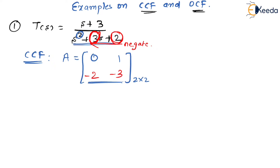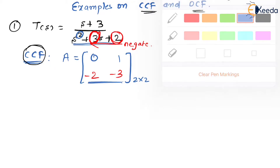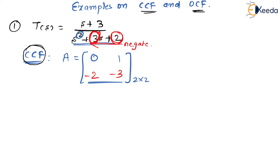Now let us find the B matrix. We have already seen that if it is CCF, then only the last state will be controlled by the B matrix. So the last entry is 1 and the rest is 0. B = [0; 1].